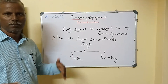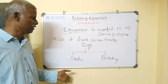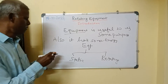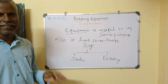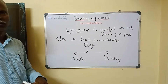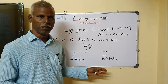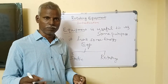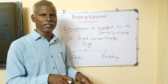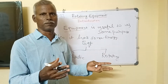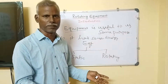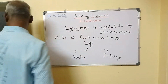We are going to divide equipment into two things. One is static equipment, another is rotating equipment. Static equipment has potential energy — it is not movable from one place to another place. But rotating equipment may be movable. It has two parts: one is static parts, another is rotating parts.